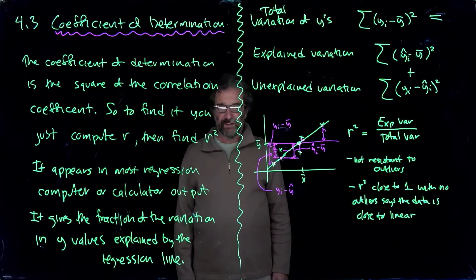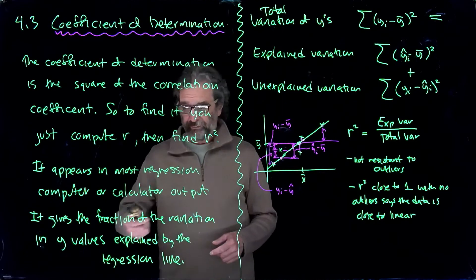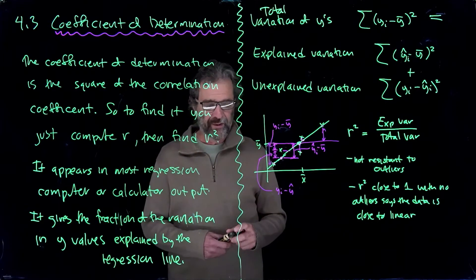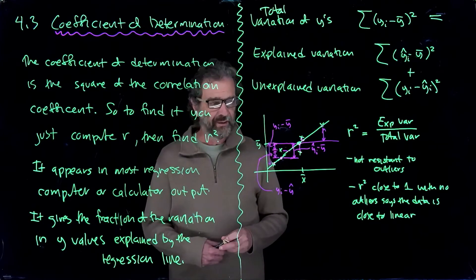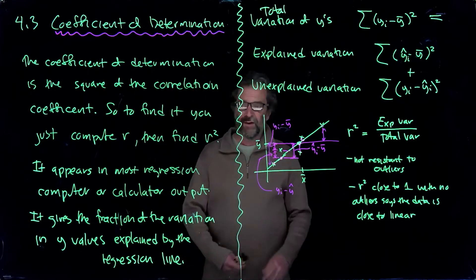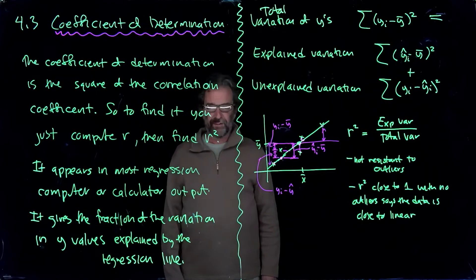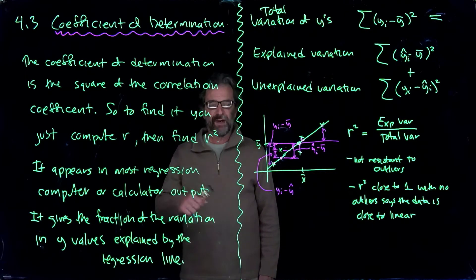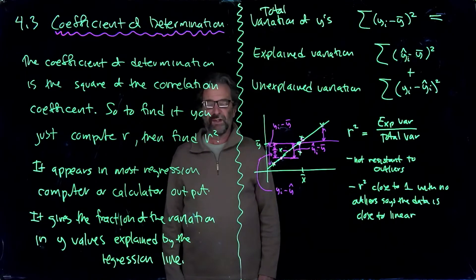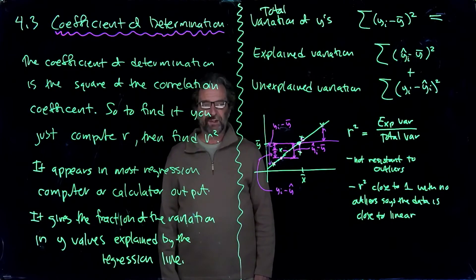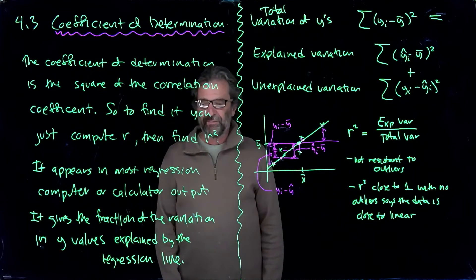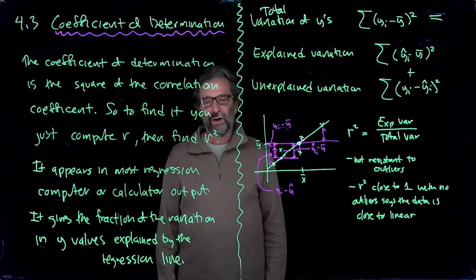And you'll see that even in the calculator output where when you do regression, it gives you the slope and the intercept and it gives you R and it gives you R squared. The purpose for that is R squared is really the better value to look at in terms of how good a job the line is doing at describing the data. R by itself, though, has a purpose because if R is positive, it's a positive association. When R is negative, it's a negative association.